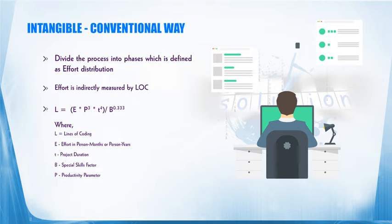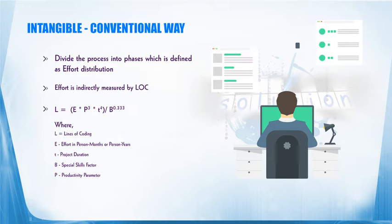Now, how to measure software effort? We have to divide the whole process of software engineering into different phases. This we define as effort distribution. When I talk about effort in software engineering, effort is indirectly measured because it is intangible. It is indirectly measured by something called lines of coding. Roger Pressman, in his book on software engineering, has given a mathematical formula to measure effort.